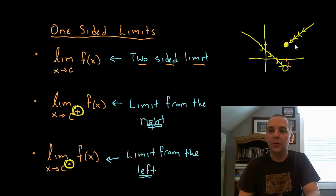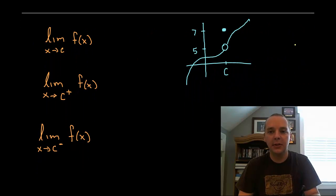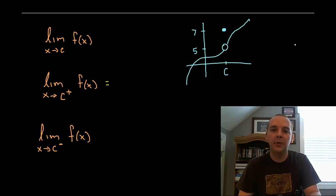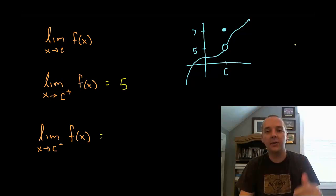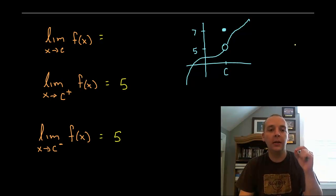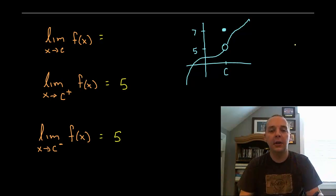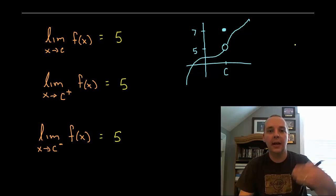Let's do rapid-fire style with a bunch of examples. Here's a picture, and we'll do the one-sided limits first. The limit as X approaches C from the right goes to 5. F of C is 7, but that's not what the limit is — the limit goes to 5. From the left-hand side it also goes to 5. This is important: the only way a two-sided limit can exist is if the two one-sided limits match each other. Since 5 and 5 agree, the overall limit exists and is 5.